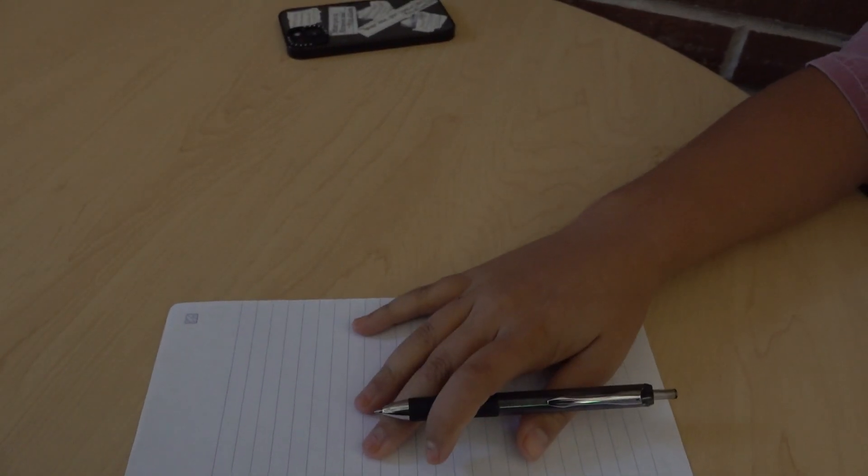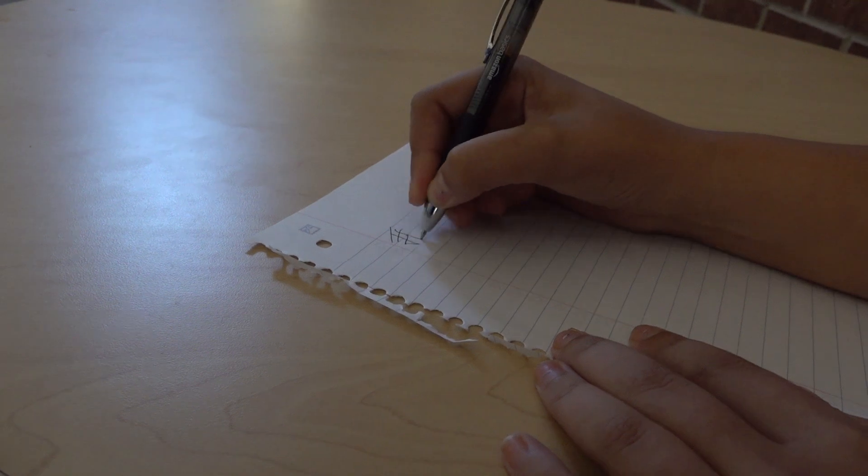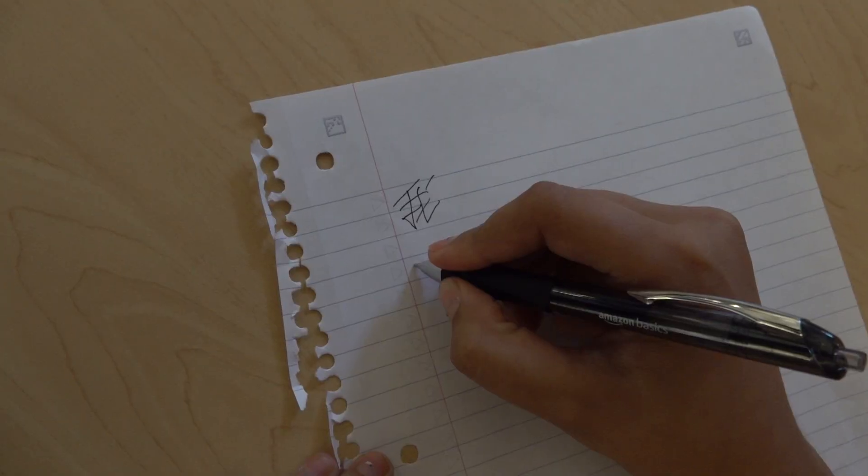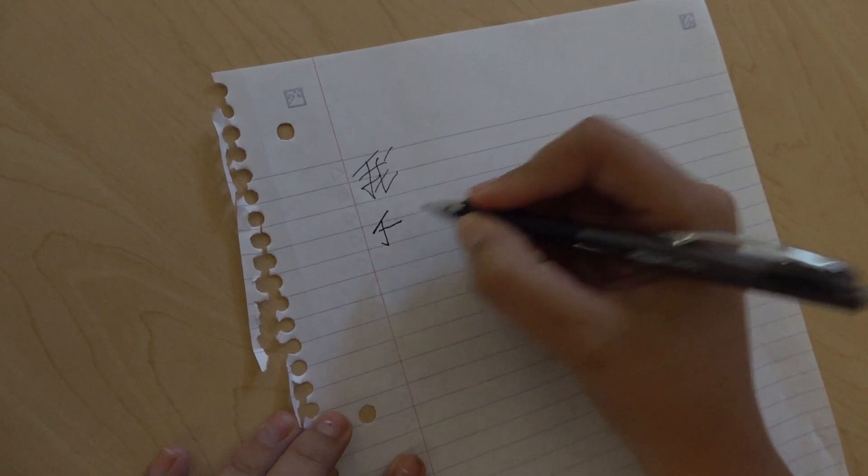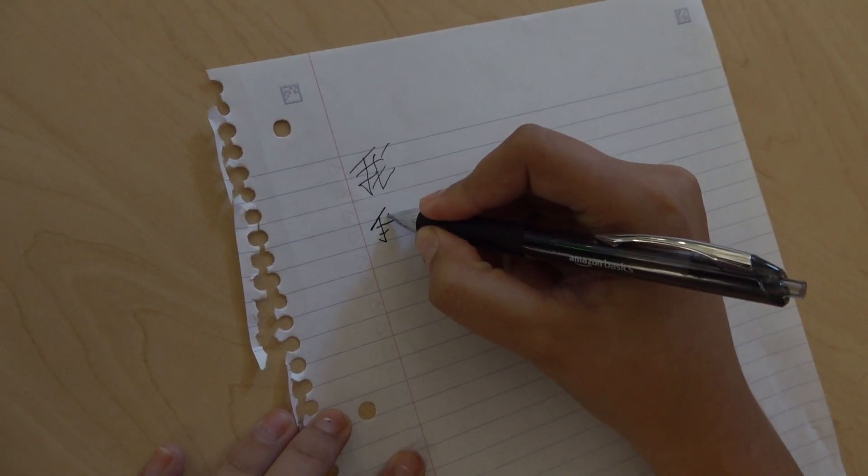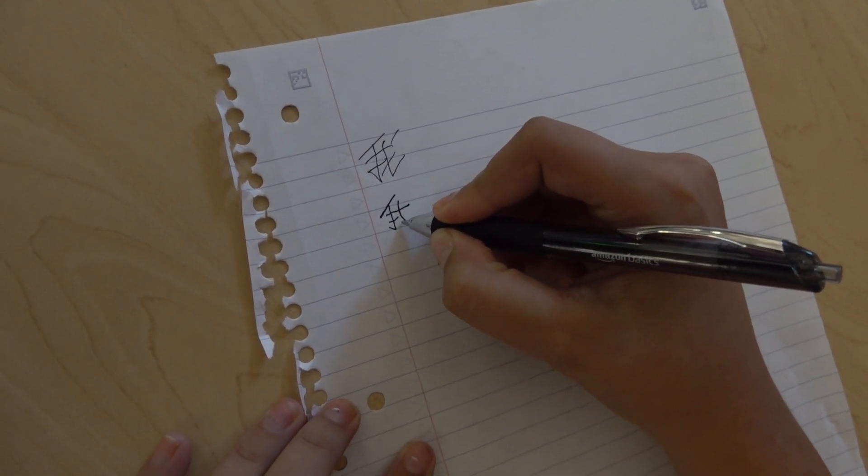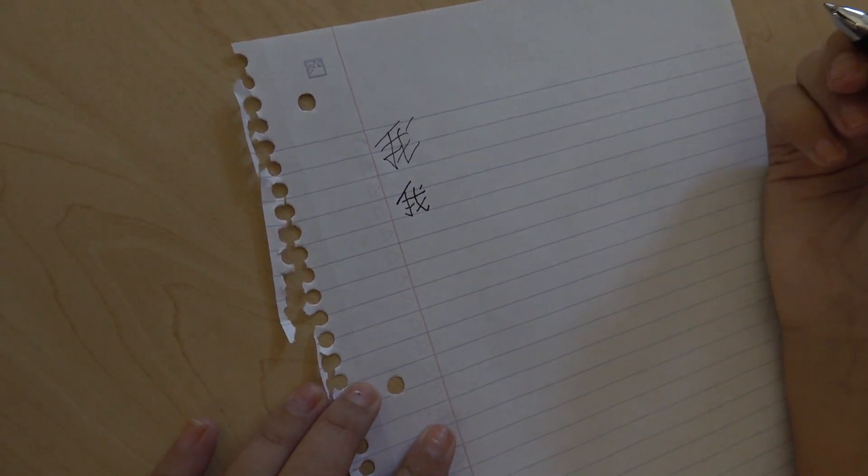Next you want to pick up the pen. So it looks something a little like this. So here, then here, then a long line, smaller line, a little curve. That is how you write I in Chinese.